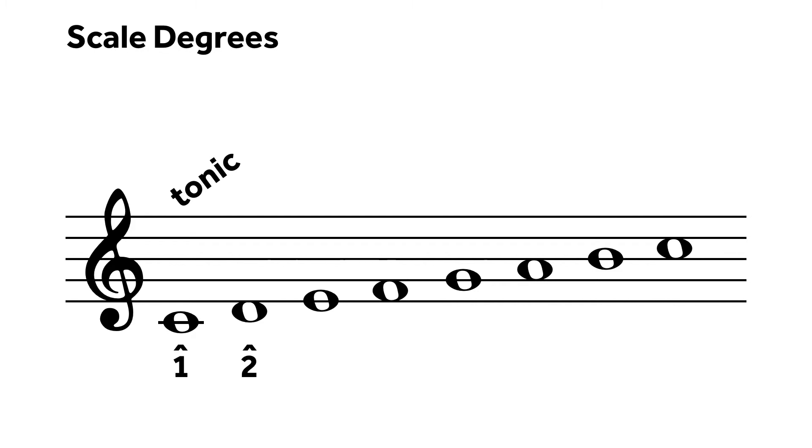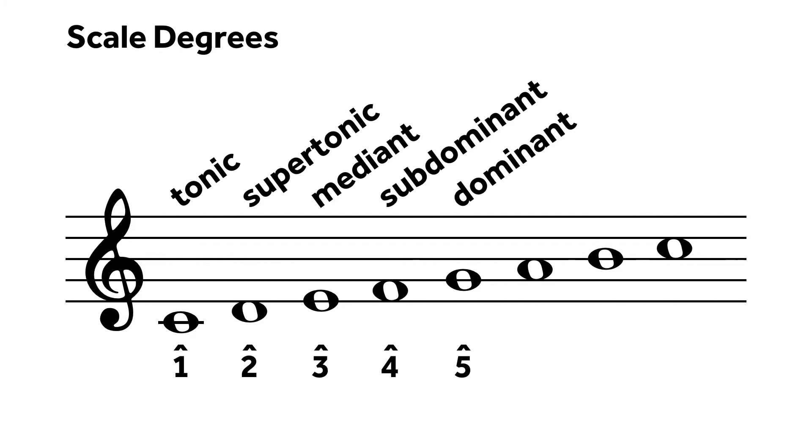The second scale degree is called the supertonic. Three is the mediant, four is the subdominant, five is the dominant, six is the submediant, and the seventh is the leading tone. The eighth note of the scale is the same as the first, a return to tonic, so we do not use scale degree eight, but scale degree one.